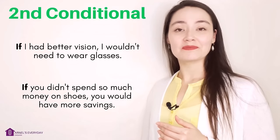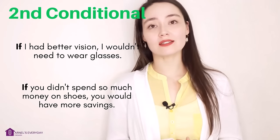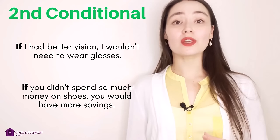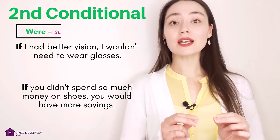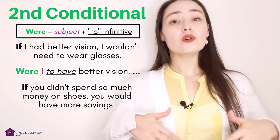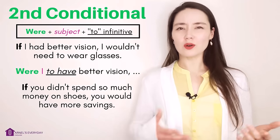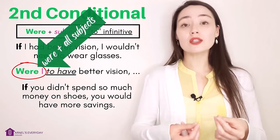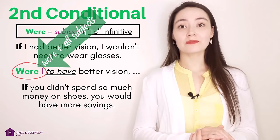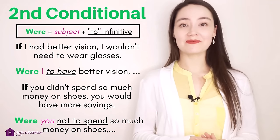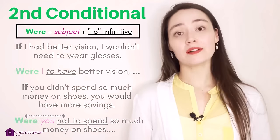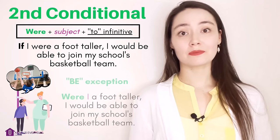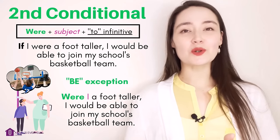Second conditional: 'If I had better vision, I wouldn't need to wear glasses.' 'If you didn't spend so much money on shoes, you would have more savings.' To invert, begin with 'were': structure is were + subject + infinitive. 'Were I to have better vision, I wouldn't need glasses.' With the second conditional, you can use 'were' with any subject — even 'I'. 'Were you not to spend so much money on shoes, you would have more savings.' Note: 'were' and 'not' are separated. Also: 'If I were a foot taller, I would be able to join my school's basketball team' becomes 'Were I a foot taller, I would be able to join my school's basketball team.' Here 'be' is the main verb — it's the only verb I need.